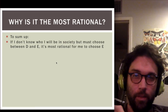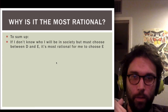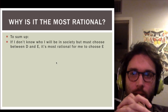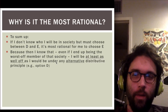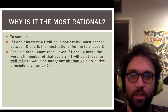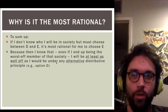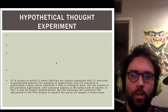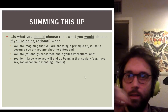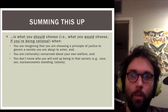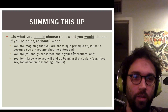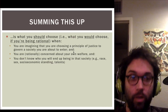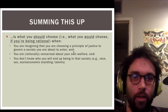The most rational choice — option E — is the one you should choose when you're rationally and justifiably concerned about your own welfare, and when you don't know who you're going to end up being in that society: not your race, sex, socioeconomic standing, or particular talents. This constructed thought experiment, while highly artificial, is going to be totally vital in understanding Rawls.